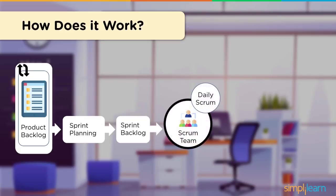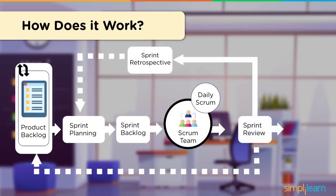The Scrum team, which is usually 5 to 9 members strong, will work on these tasks. They also have regular Scrum meetings where they talk about their victories, the issues they face, and what they plan to do in the next 24 hours. Then they have the Sprint Review — a meeting during which the team shows what they accomplished during the Sprint. Questions are asked, and observations, feedback, and suggestions are made.